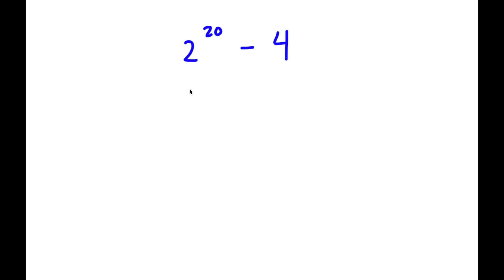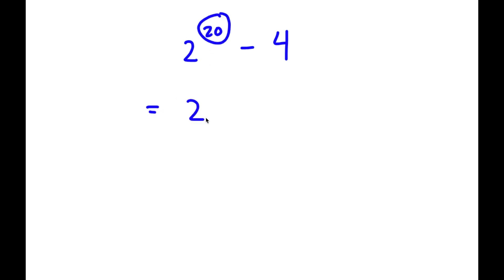In this problem, I have 2 to the power of 20 minus 4. To solve this, I'm going to first start by rewriting 20 as 10 times 2. So now I have 2 to the power of 10 times 2 minus 4.